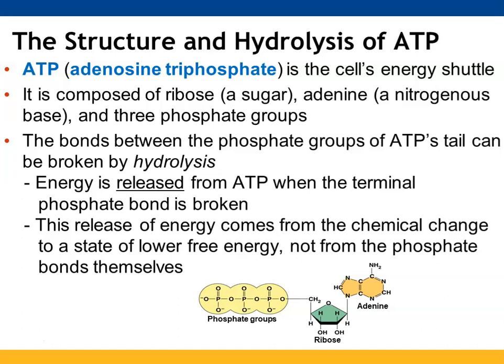ATP looks like one of your nucleotides — it has phosphate groups, a sugar, and a nitrogenous base. When you want to hydrolyze ATP, you do that by taking off the outside phosphate group, releasing energy from that terminal phosphate bond. When that bond is broken, it causes the ADP molecule to have less free energy available than what it had as ATP, which is why it's able to release so much energy.